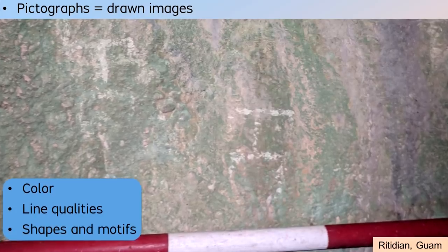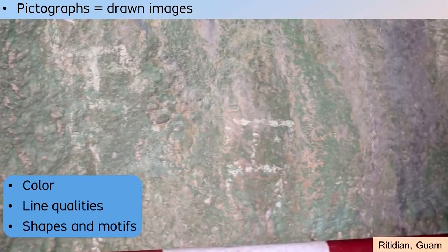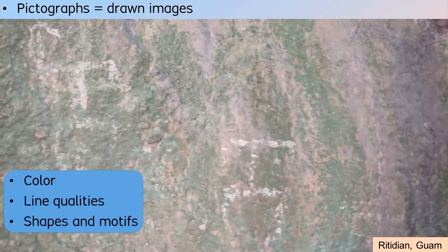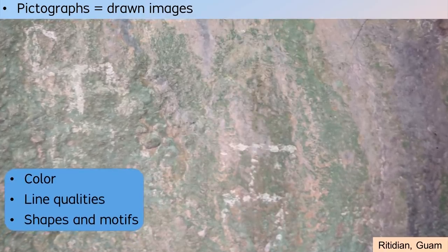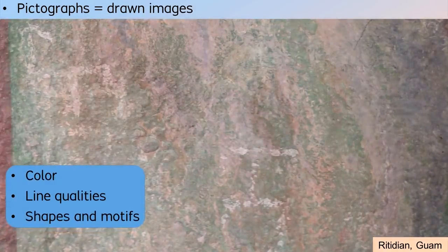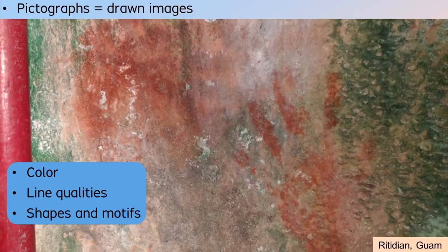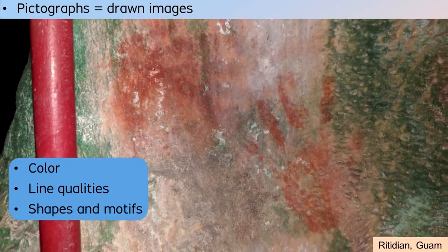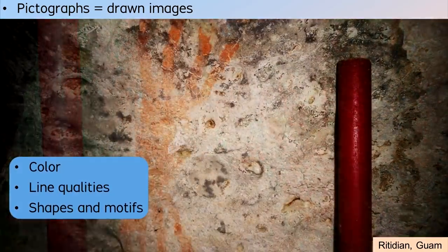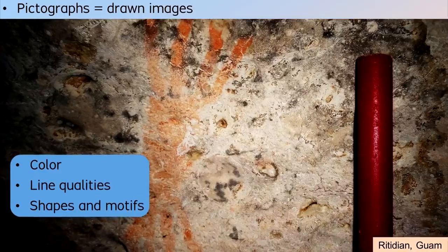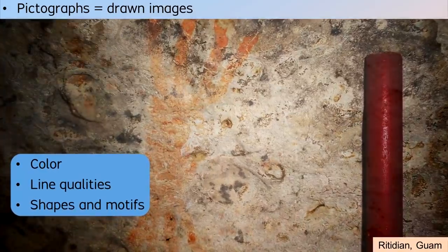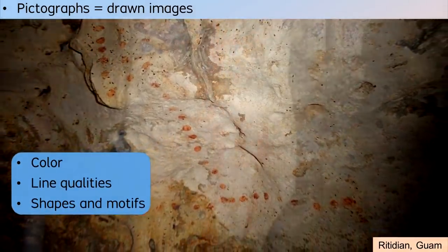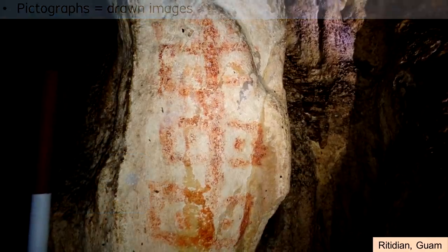As seen with petroglyphs, many pictographs all around the world depict human figures. In many regions, hand stencils or hand prints are popular. Other images show animals, collections of dots, and of course, many shapes that are not immediately identifiable today.